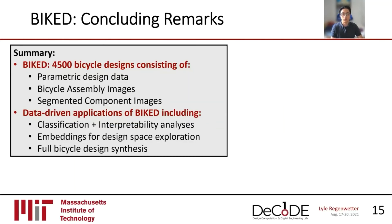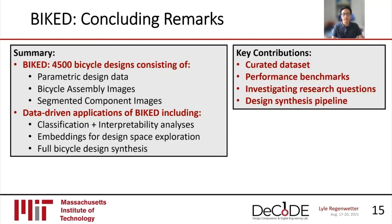Finally, I'd like to wrap up with a few concluding remarks. In this presentation, I've introduced BIKED, a dataset of 4,500 bicycle designs consisting of parametric design data, bicycle assembly images, and segmented component images. I've focused on three key research questions: the circumstances under which machines can understand a given bicycle design via a classification problem; design space exploration and visualization using embedding techniques; and how machines can synthesize new designs by learning from existing ones using variational autoencoders. The key contributions of this work are the curated dataset itself, the performance benchmarks documented for standard algorithms and methods, exploration of key research questions, and the fast generative pipeline developed to enable rapid design synthesis.